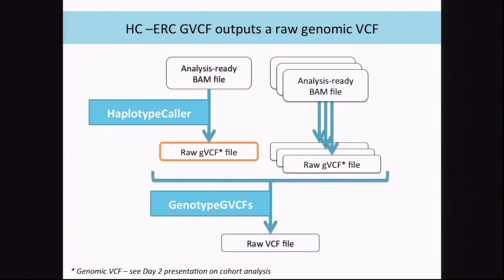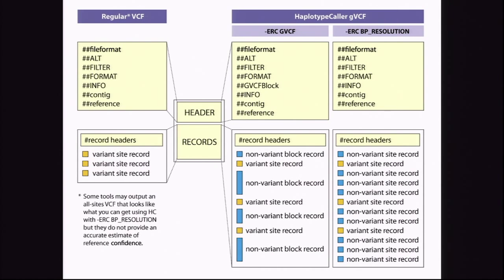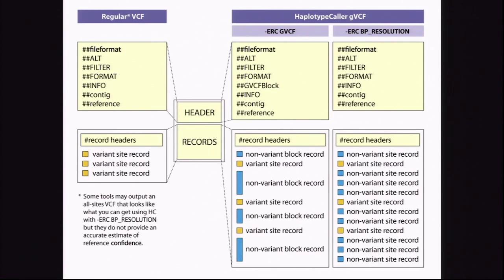You run HaplotypeCaller in reference confidence mode for each sample, ending up with one raw GVCF per sample, then run GenotypGVCFs on all the GVCFs. A regular VCF only has variant site records, whereas a GVCF has variant site records as well as non-variant block records — blocks grouped based on their genotype quality. If you want a record for all possible sites, you can use base pair resolution, which gives a record for every single site without blocking the reference sites.